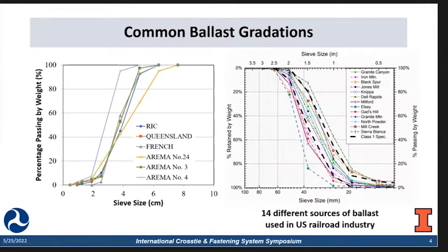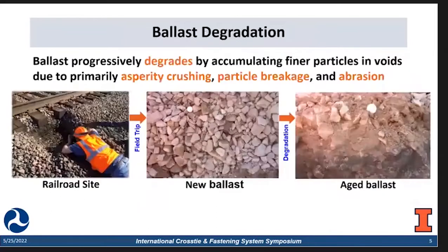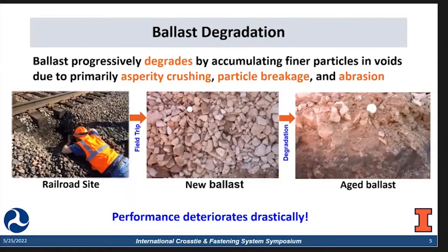On the right, we have summarized 14 different sources of ballast used in the U.S. railroad industry. Back to our target ballast — whenever you are working with ballast, you will always face the ballast degradation issue because the ballast will progressively degrade by accumulating fine particles in voids. Whenever that happens, the performance of the ballast will deteriorate significantly.